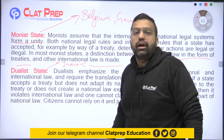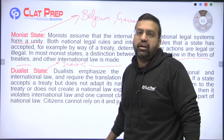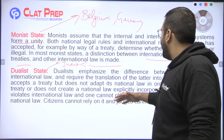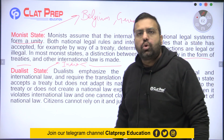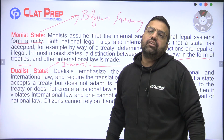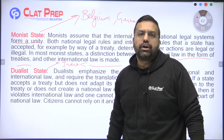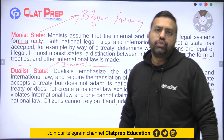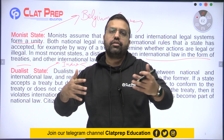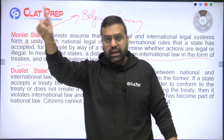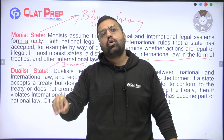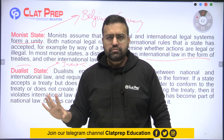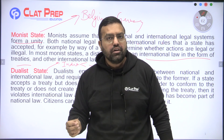तो पहली बात: आप treaty के signatory बन गए लेकिन national law में उसको incorporate नहीं करा — तो international law की नज़रों में यह एक illegal act है उस state के द्वारा। And one cannot claim that the treaty has become part of the national law. Citizens cannot rely on that particular treaty in court, और judges cannot apply it. So if a question comes that XYZ is a dualist state, became signatory to a treaty but has not yet incorporated it into local law — then despite being a signatory, no benefit of that treaty can be claimed because its incorporation into local law has not happened.